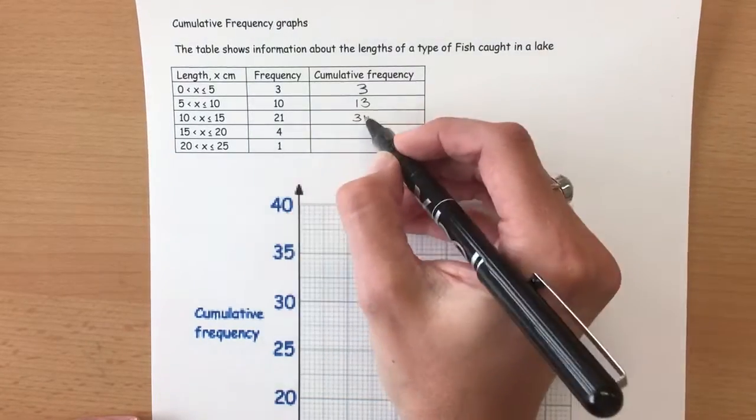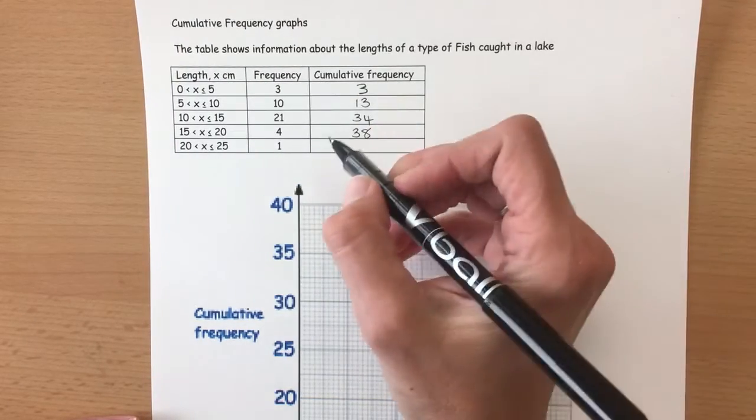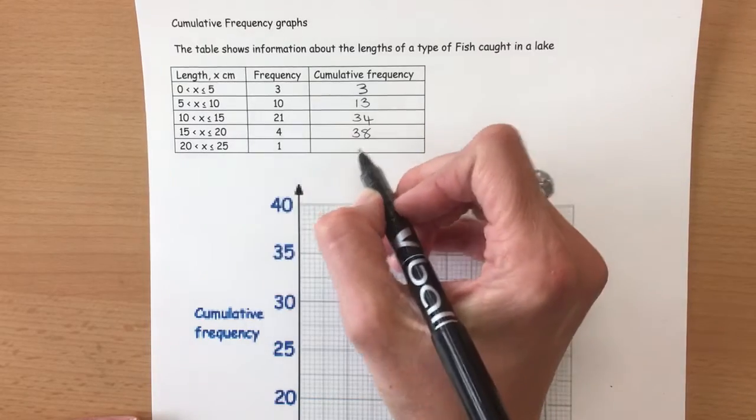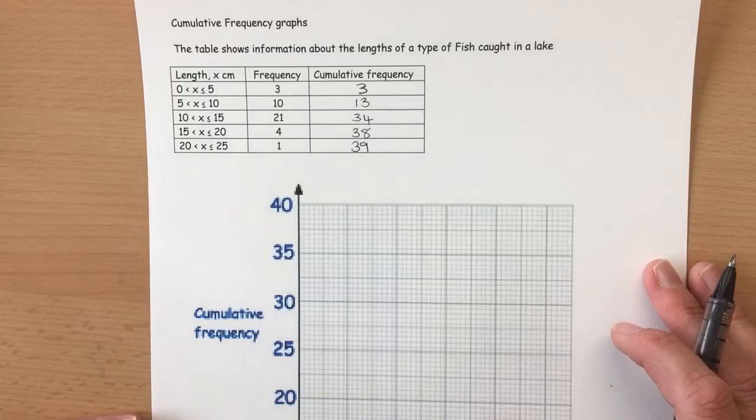Then we move to the next row and we add on the 4 to the 34 and we get 38, and then when we get to the last row we add on the 1 to the 38 and that gives us 39. So we've got 39 in total.